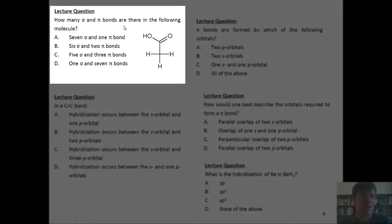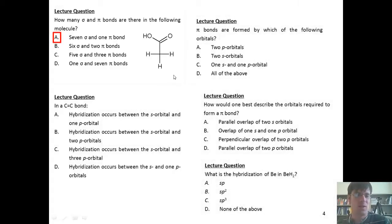On this first question, we're asked how many sigma and pi bonds there are in this molecule shown. The correct answer is A. If you want to know why, stay tuned right now.